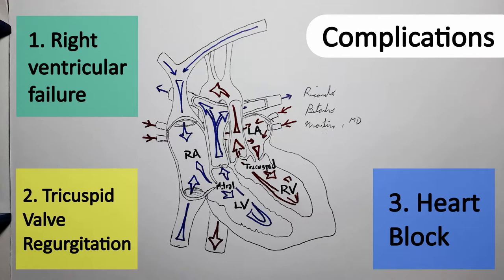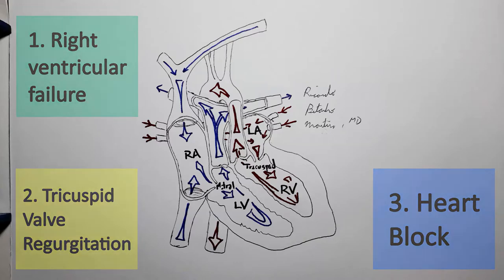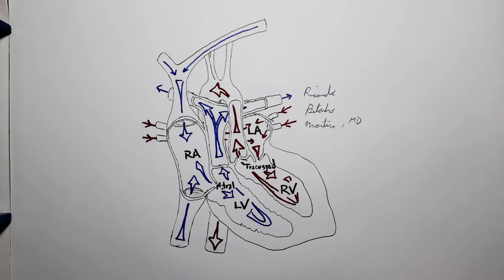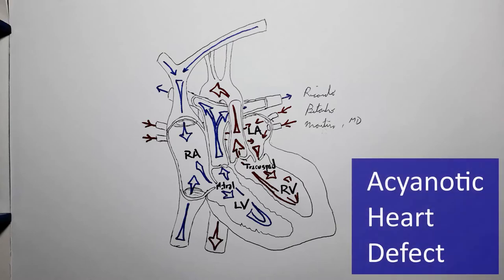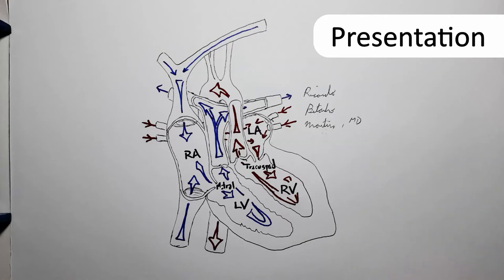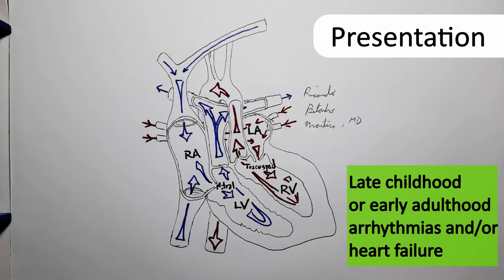Contrary to dextro TGA, levo TGA is not a cyanotic heart disease. There is nowhere for mixing to occur, nor any way for deoxygenated blood to enter the systemic circulation — unless it is associated with other heart defects such as a ventricular septal defect, which is actually common, but by itself it does not cause cyanosis. Therefore, the initial presentation may actually be the complications in late childhood or even adult life, once heart block develops or the patient begins to present symptoms of heart failure.